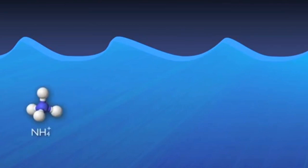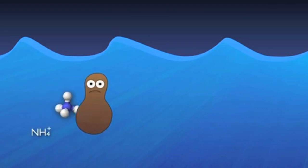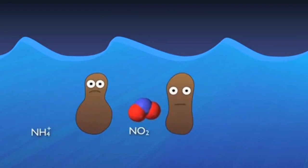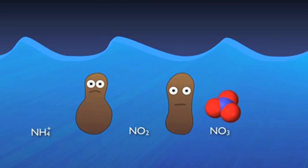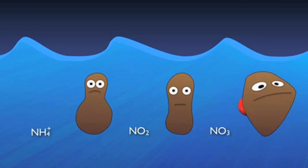Specialized autotrophic bacteria, or nitrifiers, convert the ammonium to nitrite (NO2) and then to nitrate (NO3) through various biological processes. As dissolved oxygen is depleted by the nitrifiers and other organisms in the basin, other specialized heterotrophic bacteria — denitrifiers — are able to thrive by using the oxygen attached to the nitrate molecules for respiration, creating nitrogen gas as a byproduct. The nitrogen gas then simply bubbles out of the water into the atmosphere.